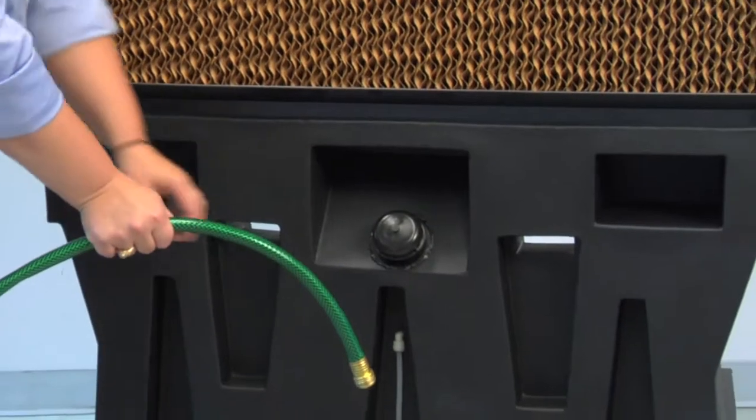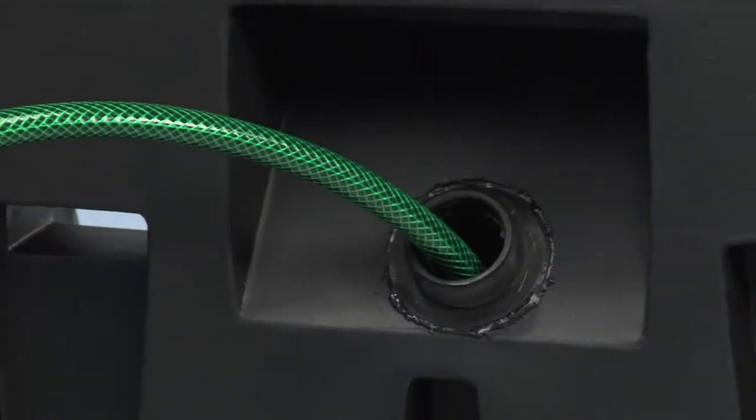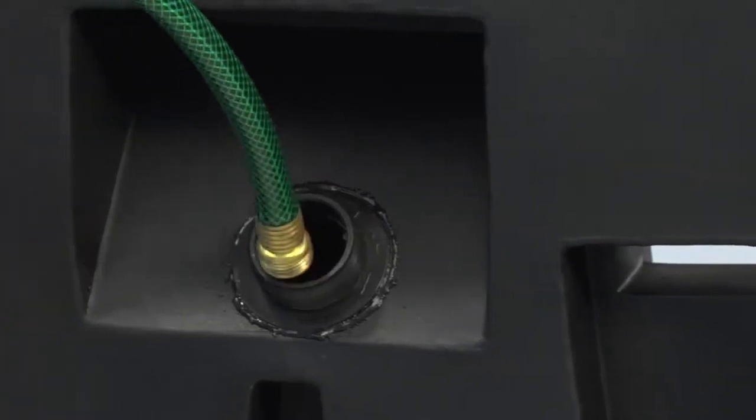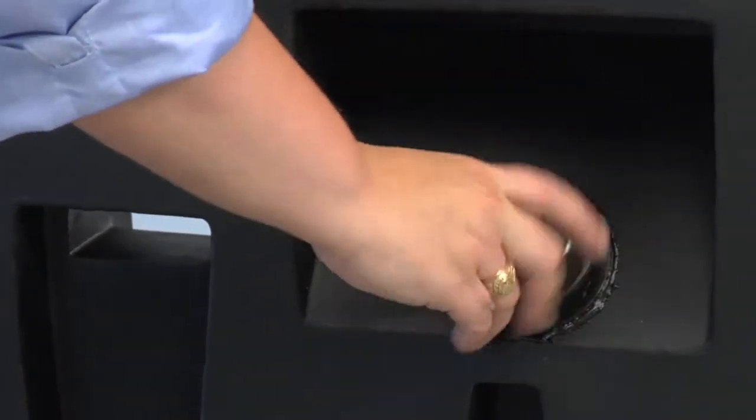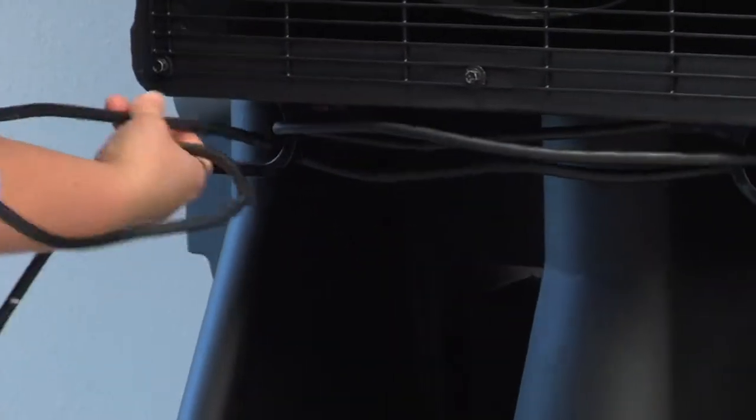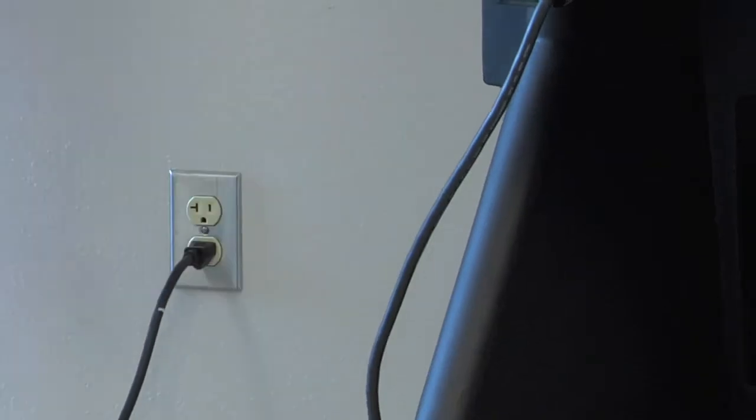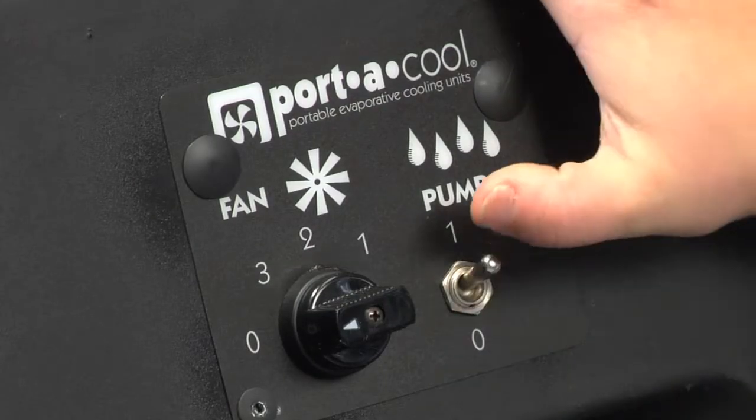Fill the 42-gallon reservoir with water. Unroll the cord and plug it into a standard 110 outlet. Then, turn on the pump to start the water saturating the pads.